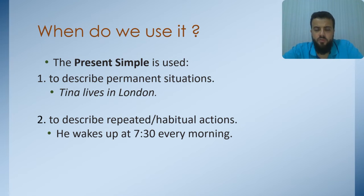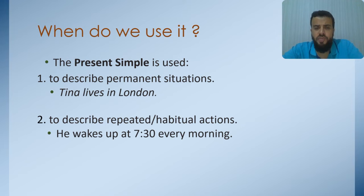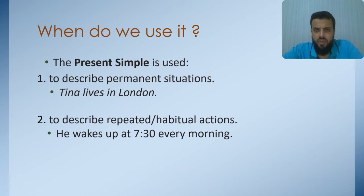For example, maybe in the future he will try to find another job — maybe. But now, he is an engineer. This can also happen when we talk about gender, for example: he is a man. Or when I talk about preferences: he likes coffee, and so on. To describe repeated habitual actions — a routine or a habit — he wakes up at 7:30 every morning. So, this is his habit.